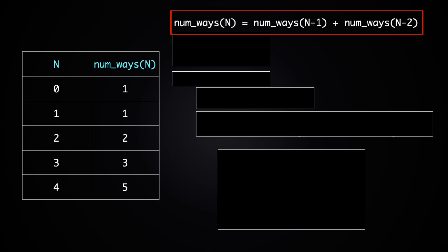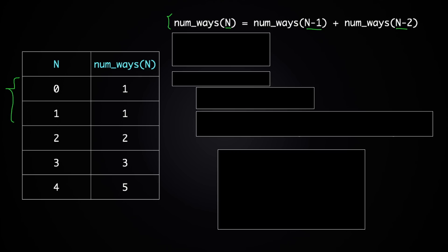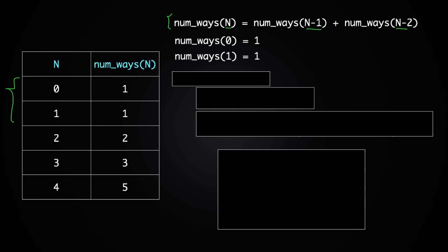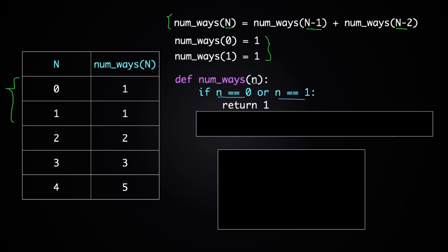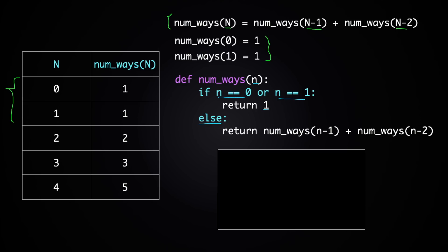Now let's write code using this recursive relationship. We need base cases — a good choice is n=0 and n=1, both returning 1. Our function num_ways takes n, handles the base case when n is 0 or 1 by returning 1, and otherwise returns num_ways(n-1) + num_ways(n-2). You'll notice this is just like the Fibonacci sequence.